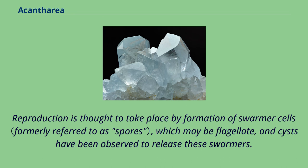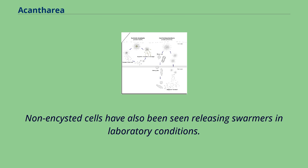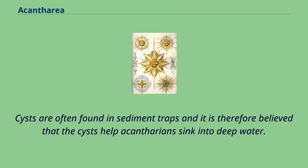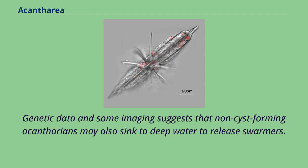Non-encysted cells have also been seen releasing swarmers in laboratory conditions. Not all life cycle stages have been observed, however, and no one has witnessed the fusion of swarmers to produce a new acantharian. Cysts are often found in sediment traps and it is therefore believed that the cysts help acantharians sink into deep water. Genetic data and some imaging suggest that non-cyst-forming acantharians may also sink to deep water to release swarmers.